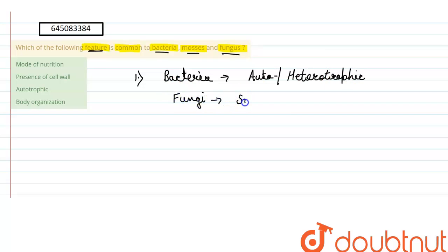So this would be a wrong option because the mode of nutrition for all these organisms is not common. Second is presence of cell wall. This would be a common feature because all these organisms—bacteria, mosses, as well as fungi—all of them possess the cell wall. So this would be the correct option for us.